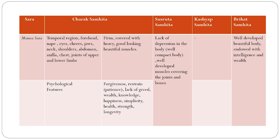Next, Mansa Sara individuals. As per Acharya Charak, the Shankha, Lalata, Krikatika, Akshi, Ganda, Hanu, Griva, Skanda, Udara, Kaksha, Vaksha, Pani, Pada, Sandhi — that is, the temporal region, forehead, nape, eyes, ears, jaws, neck, shoulders, abdomen, axilla, chest, and joints of upper and lower limbs are firm, covered with heavy, good-looking, and beautiful muscles. This is the physical characteristic of the Mansa Sara individual.